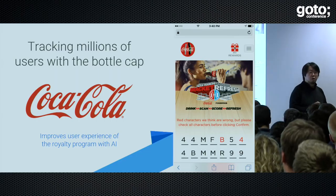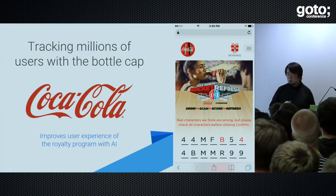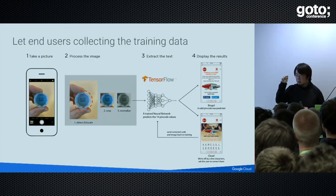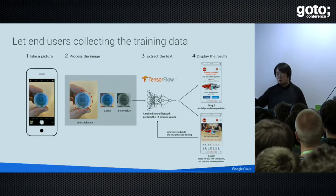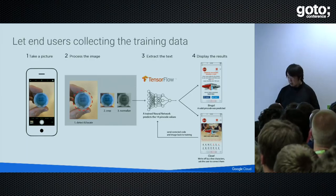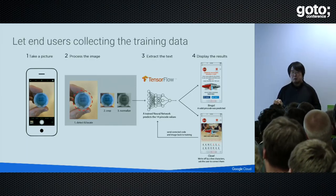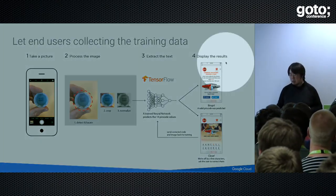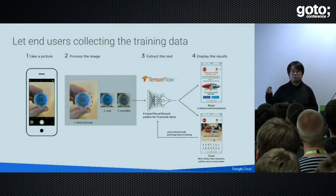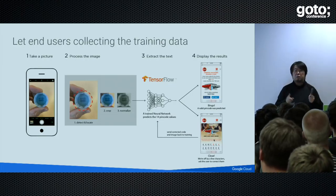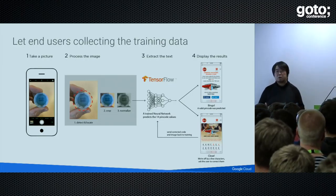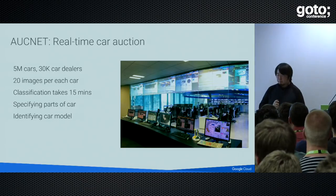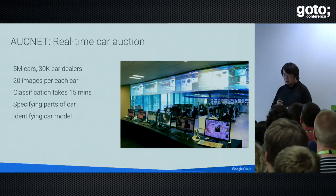Coca-Cola is using TensorFlow for image recognition for serial numbers in bottle caps, so that a smartphone application can take a photograph of the bottle cap and recognize the numbers to apply for prizes or promotions. The interesting point of this use case is that machine learning algorithms are not perfect — you cannot get 100% accuracy, so it makes mistakes. But they are letting consumers fix those mistakes. By getting real images and correct labels from consumers, they are able to continuously improve accuracy using customer feedback.